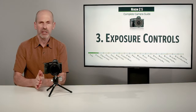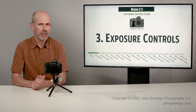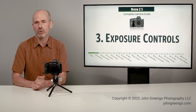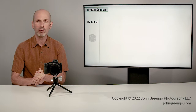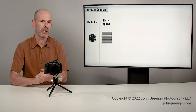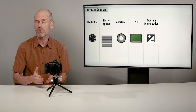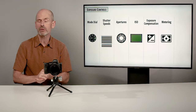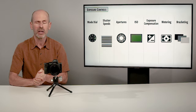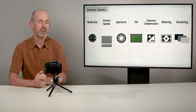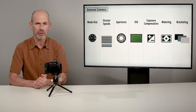Welcome folks to section three, one of the most important sections on exposure controls. In here, we're going to be going over everything to get the best possible exposure. We'll be talking about all the different options in the mode dial, which means we talk about shutter speeds, apertures, ISOs, as well as a number of other tools for getting just the right exposure.